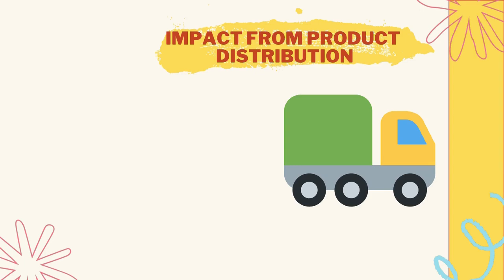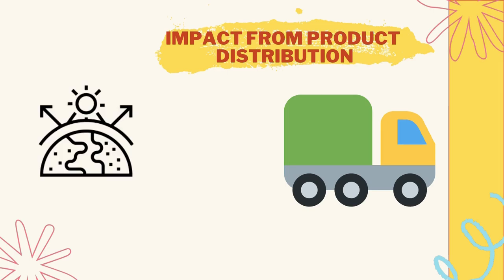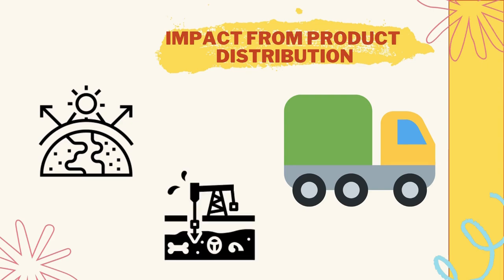The impact of product distribution: In 2020, 25,978 million liters of fuel was used for on-road vehicles in Malaysia, and that is not a sustainable way of using fossil fuel — it will bring depletion of non-renewable sources in the future. Collectively, cars and trucks account for nearly one-fifth of all emissions, emitting around 24 pounds of carbon dioxide and other global warming gases for every gallon of gas. Shipment transportation also emits carbon dioxide, which will cause depletion of the ozone layer.